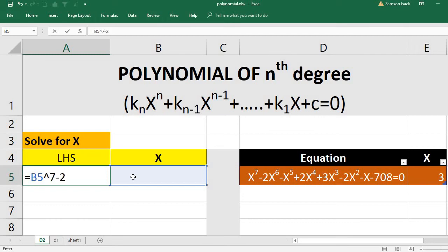So here we have x power 7, minus 2 into x power 6, which is B5 power 6, caret 6, minus x power 5, which is nothing but B5 power 5.